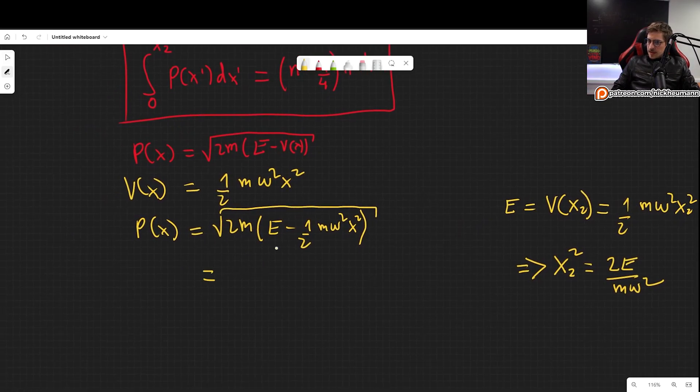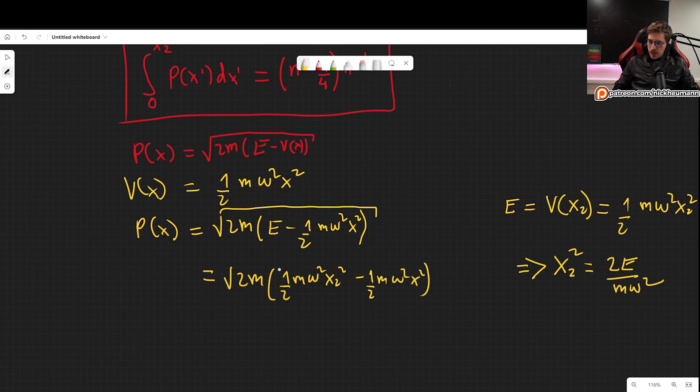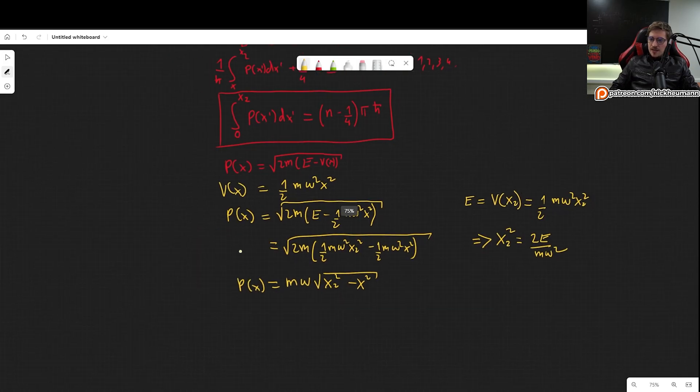So now here we can, instead of writing E, we can write this expression. So we get square root of 2m, one half m omega squared x2 squared minus one half m omega squared x squared. So of course here the one halves will cancel out. We can factor m squared and omega squared outside. So we get m and omega, and then we get square root of x2 squared minus x squared. So this is a much more simpler notation for our momentum. And we can now plug it into our integral.